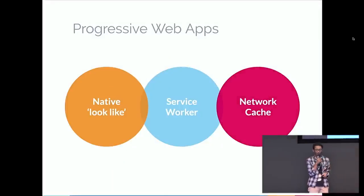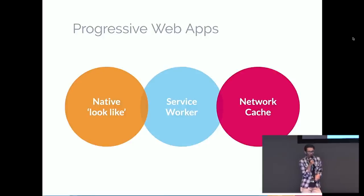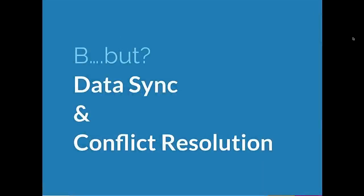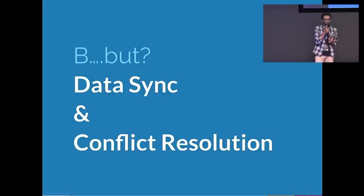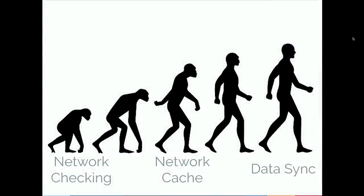Progressive web apps come with solutions: native-like look, service workers, network cache, and background sync. You just create a manifest to cache your assets, and you can intercept network requests. But is progressive web apps enough? How about data synchronization? How about conflict resolution? When your users are online, you can transact data in real time. But when your users go offline and modify data, how do you sync it when they come back online?